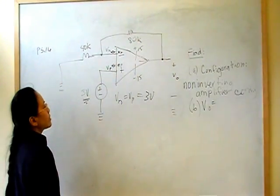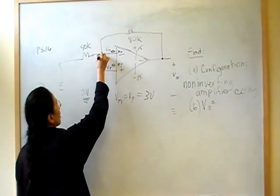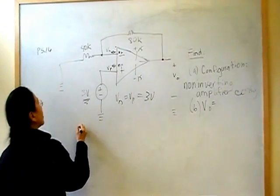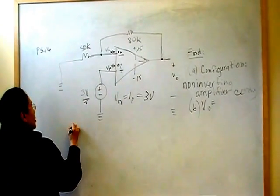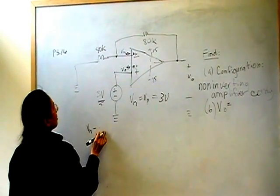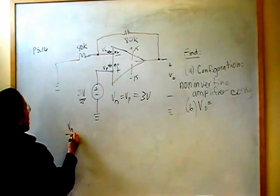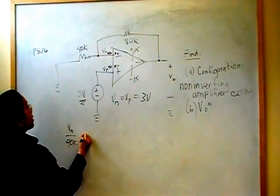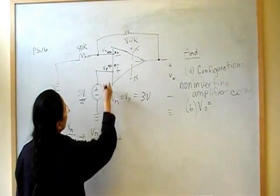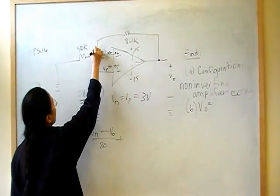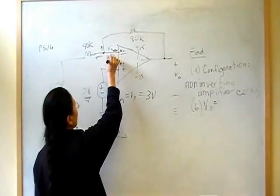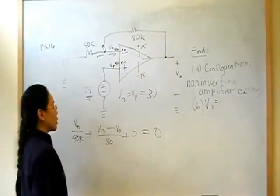So, we're going to write our node voltage equation right there. We have node voltage at V-N. We've got V-N minus V-N over 40K, plus V-N minus V-out over 80. And, of course, the current here, remember, KCL is just the sum of the currents leaving the node has to equal zero. So, that current is zero, and all of those have to equal zero.